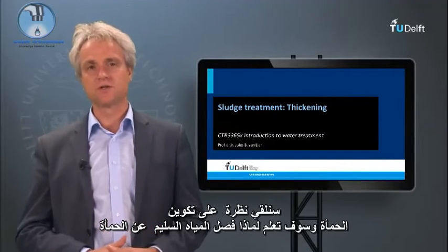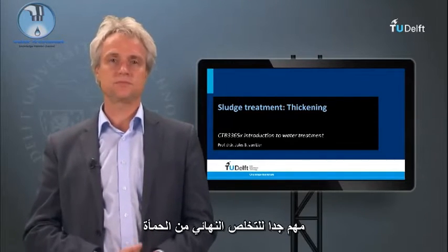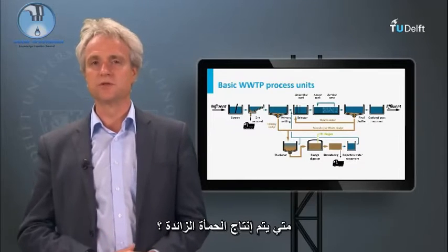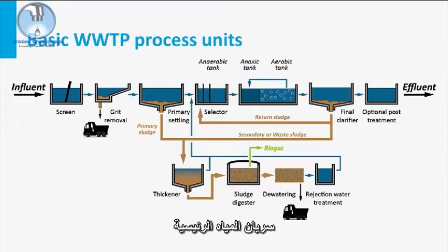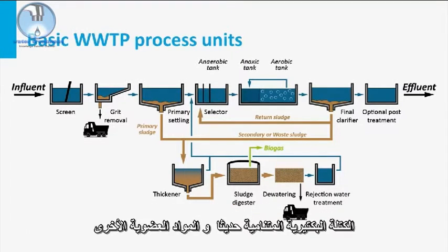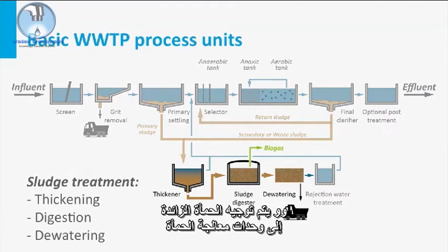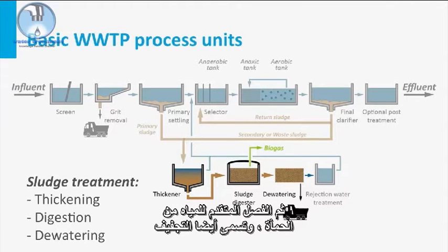We will look at the composition of the sludge and learn why proper sludge-water separation is so important for the final disposal of the sludge. Looking at the basic process units of the sewage treatment plant: in the primary clarifier, non-stabilized sewage sludge is settled and separated from the main water stream. In the secondary clarifier, settling of secondary sludge takes place, consisting of newly grown bacterial mass and other organics. Bacterial mass is recycled to the aeration tank to increase bioconversion capacity, but excess sludge is directed to the sludge treatment units. Sludge treatment generally consists of thickening, biological stabilization by anaerobic digestion, and advanced separation of water from the sludge — also called dewatering.